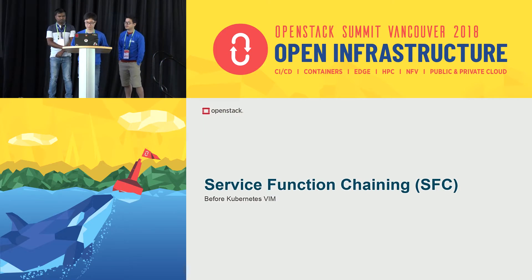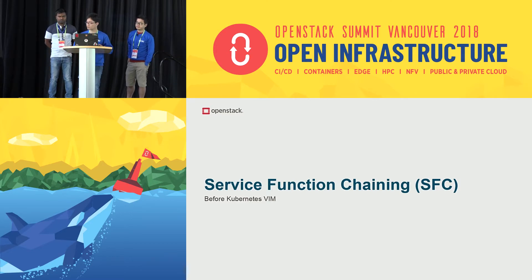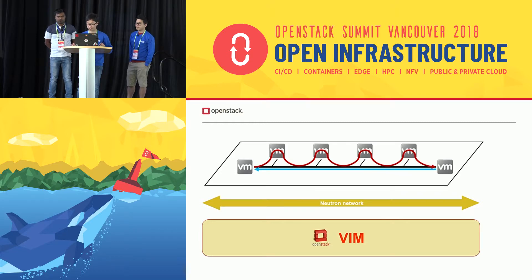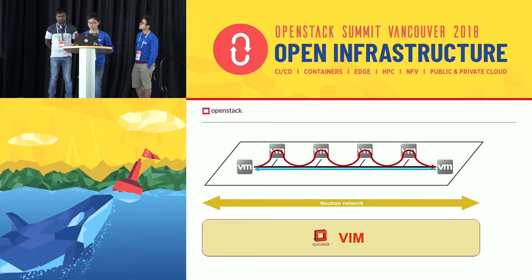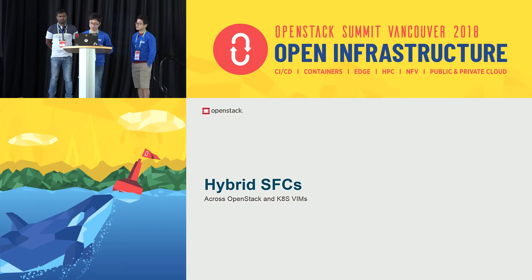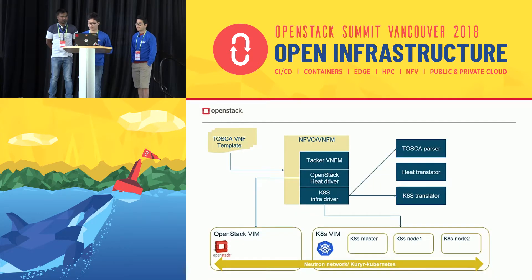Before we had the Kubernetes team, we only supported the OpenStack VIM, and we could only create the service function chaining between VMs. After we added the Kubernetes VIM, we can register two VIMs — OpenStack and Kubernetes.